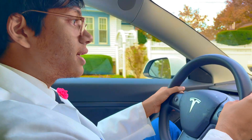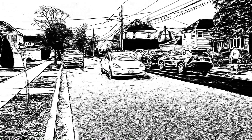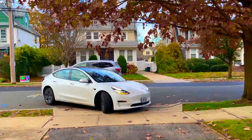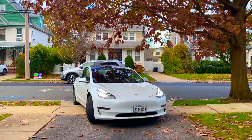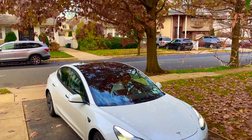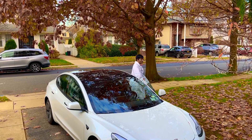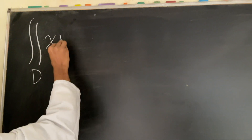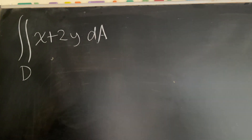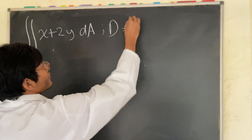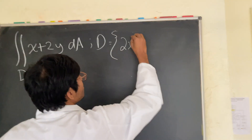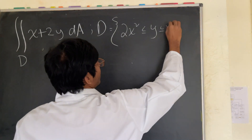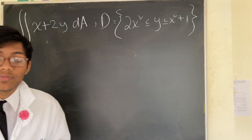If you have a tea or coffee you can also go ahead and grab that. All right folks, today we're gonna solve yet another double integral problem. The problem is as follows: find the double integral over the region D of x plus 2y dA, where the region D is the region between 2x squared and x squared plus 1.